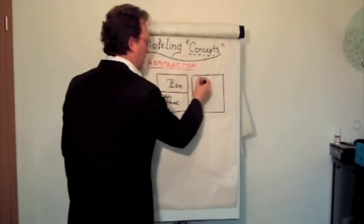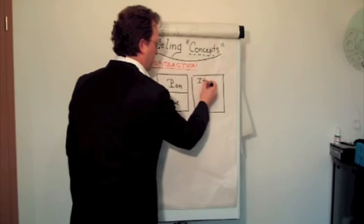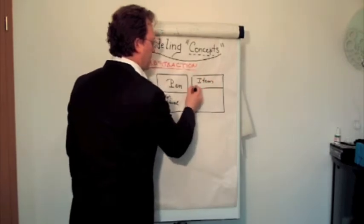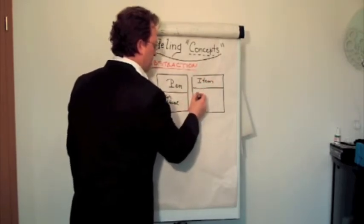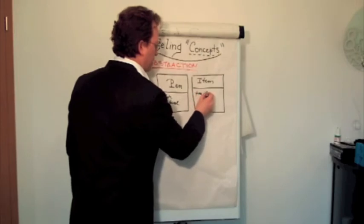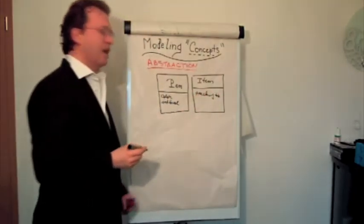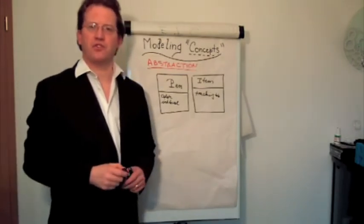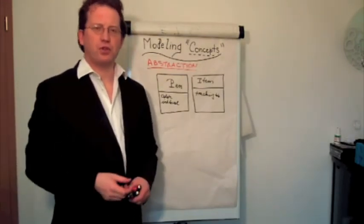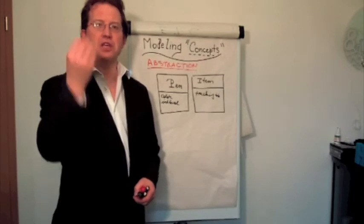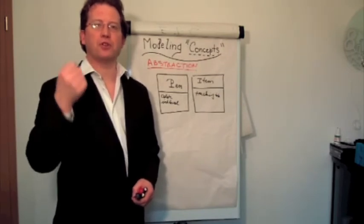I have an item. And this item may just have, let's say, a tracking number. Well, it may be the case. So what's important when you do modeling is that you find the key abstractions, the important abstractions.